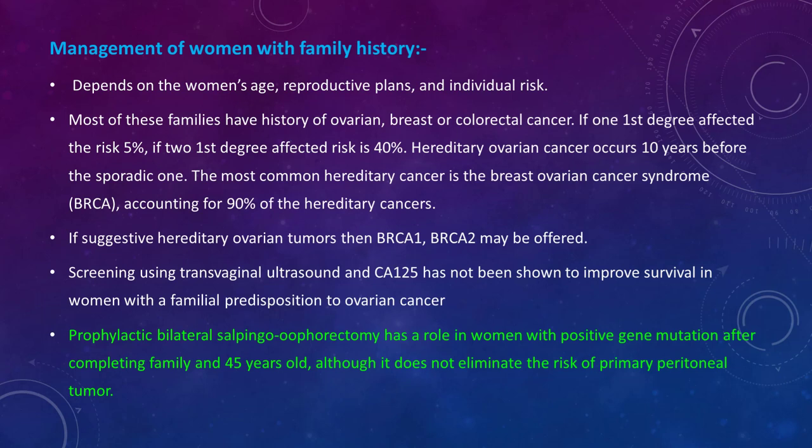Most of these families have a history of ovarian, breast, or colon cancer. If just one first-degree relative is affected, the risk is 5%. If two first-degree relatives such as mother or sister are affected, the risk rises to 40%. Hereditary ovarian cancer occurs 10 years earlier than sporadic cases. The most common hereditary cancer is the breast-ovarian cancer syndrome caused by BRCA gene mutation, accounting for 90% of hereditary cancers.